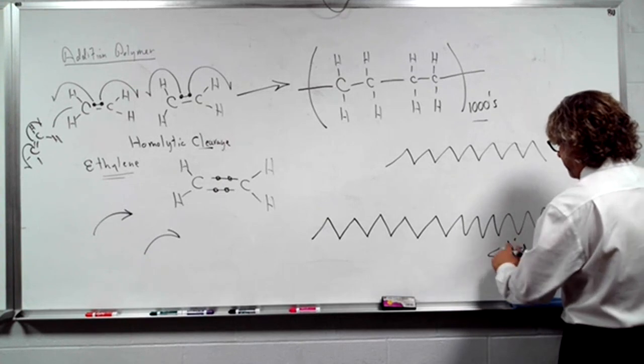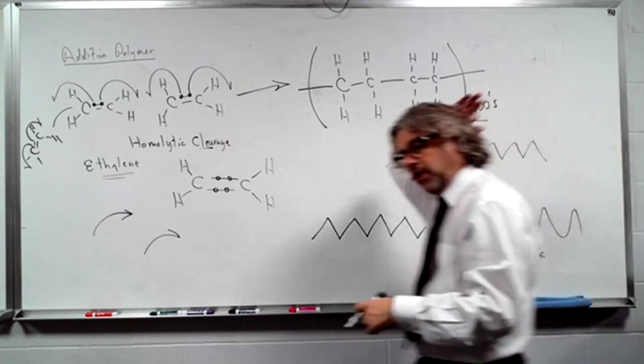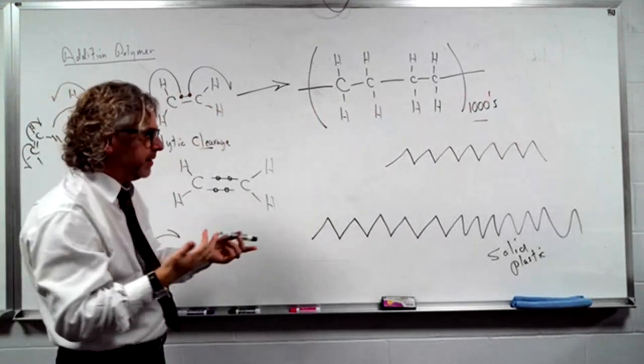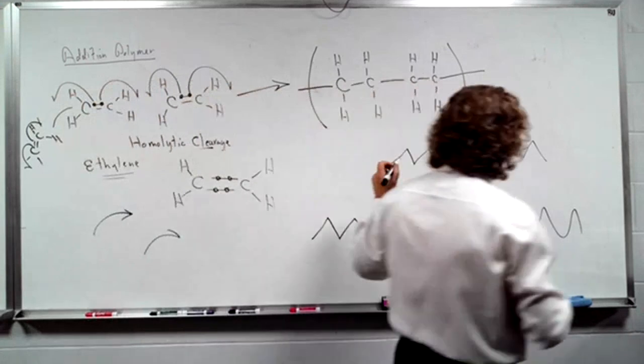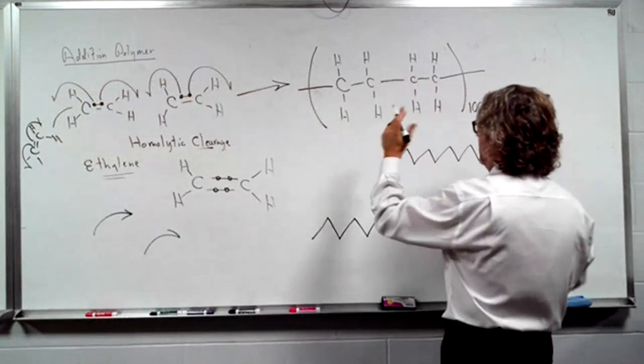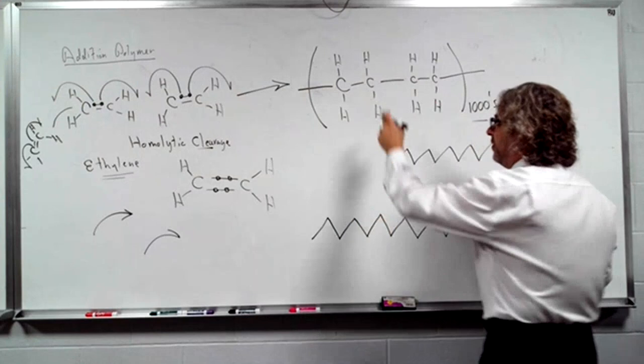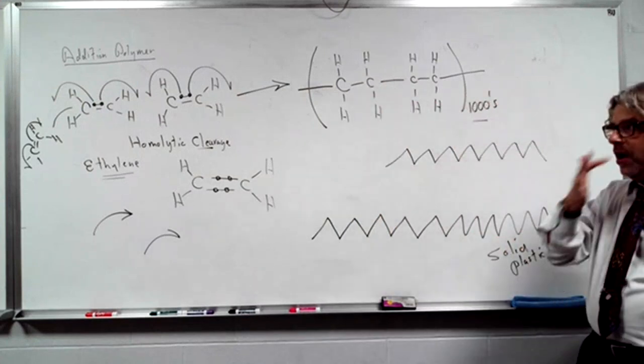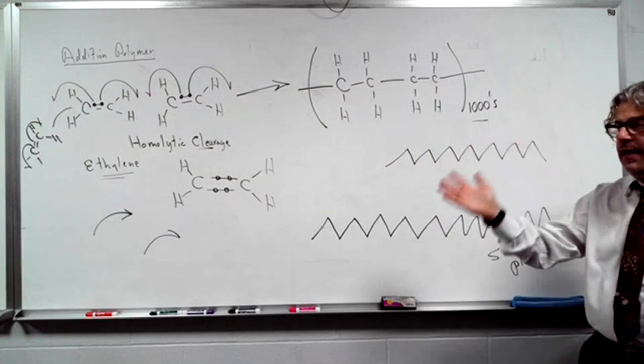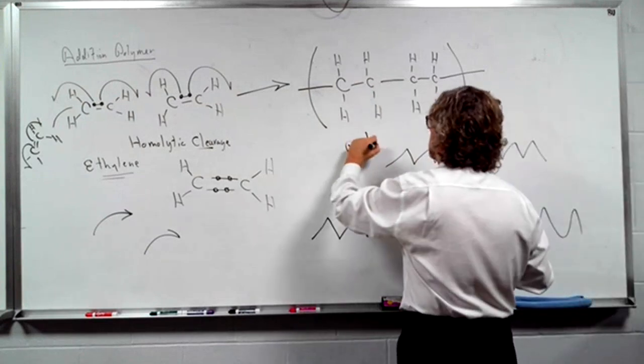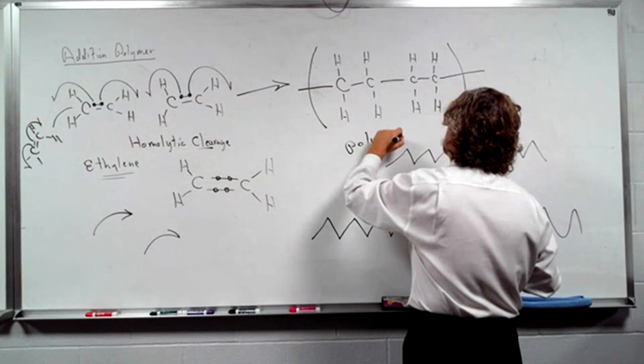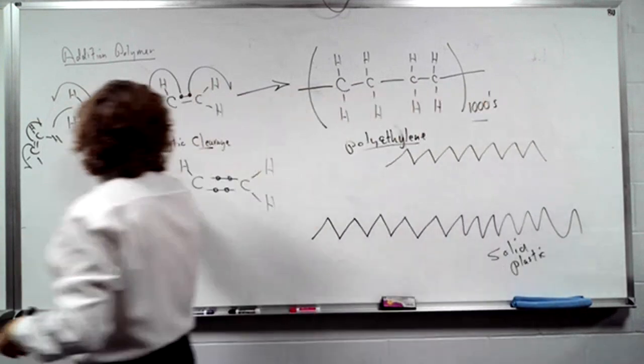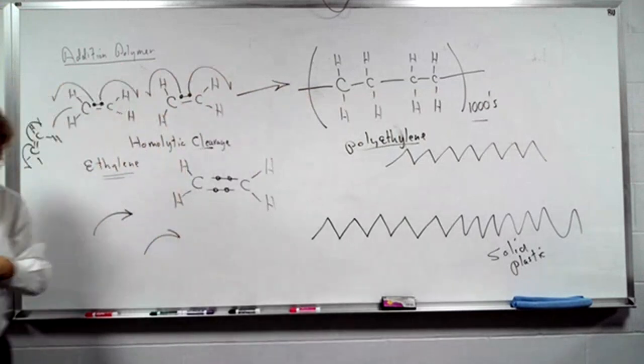This piece of plastic is nothing but long chains of carbon going up and down. Now, if you had this, it would be named after the monomer. That's a single bond, so it's technically a polyane, but because it came from ethylene, this is polyethylene.